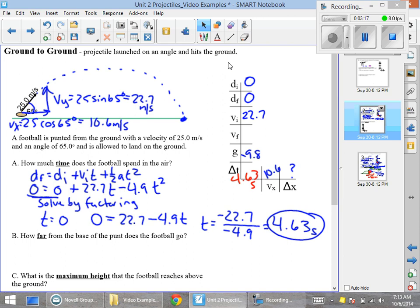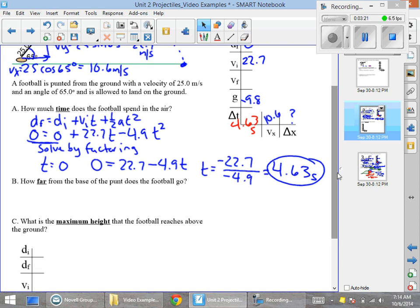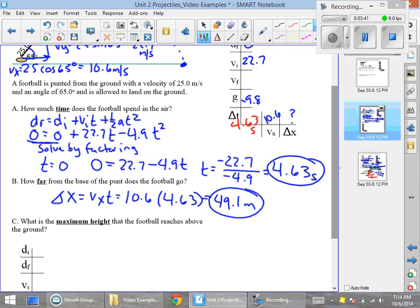To figure out how far from the base of the punt does our football land, we get that it is going to go 49.1 meters. That's a pretty good punt for a football player.